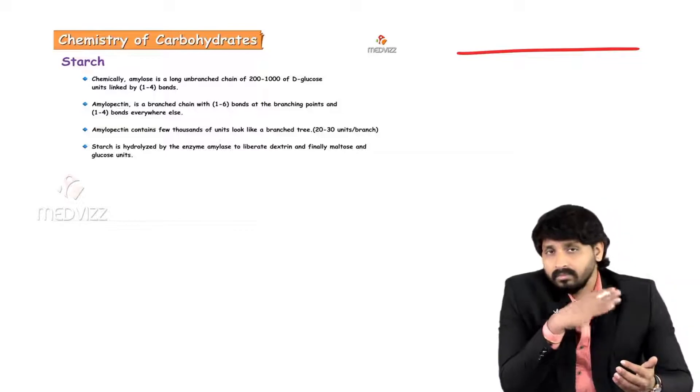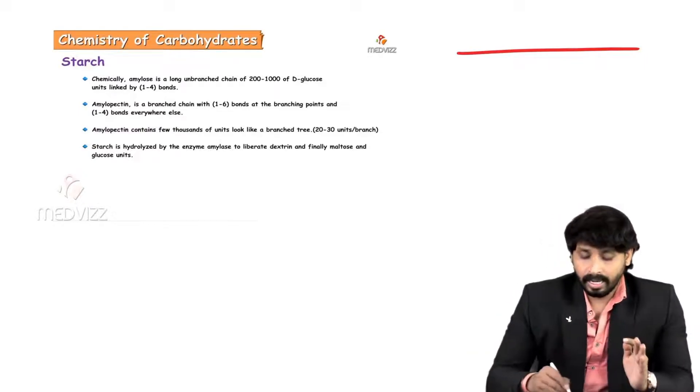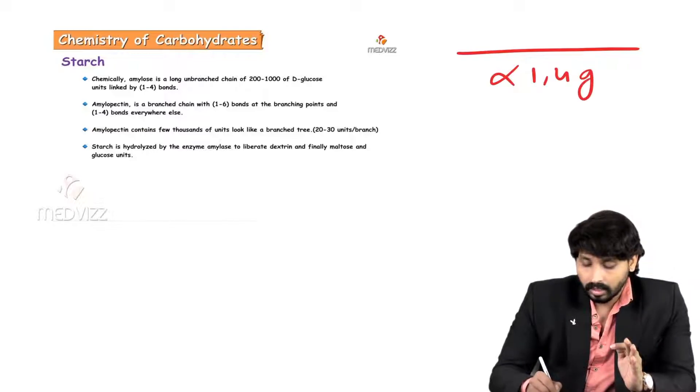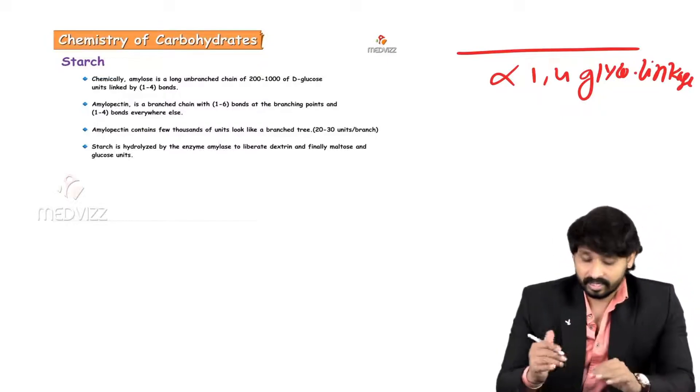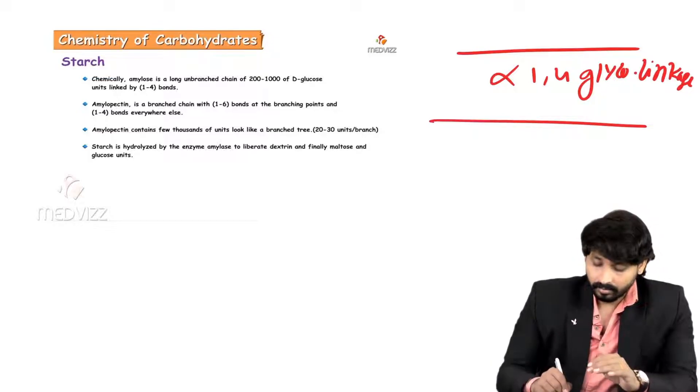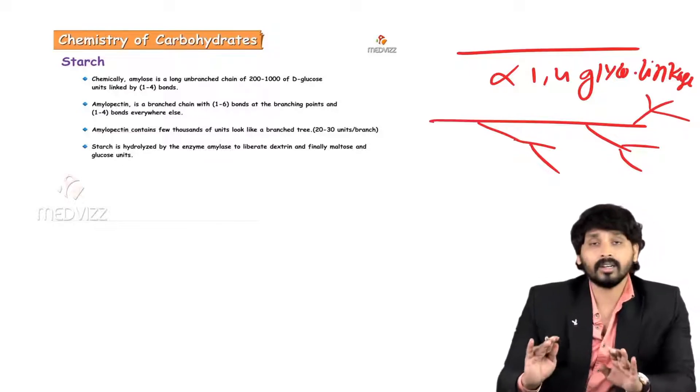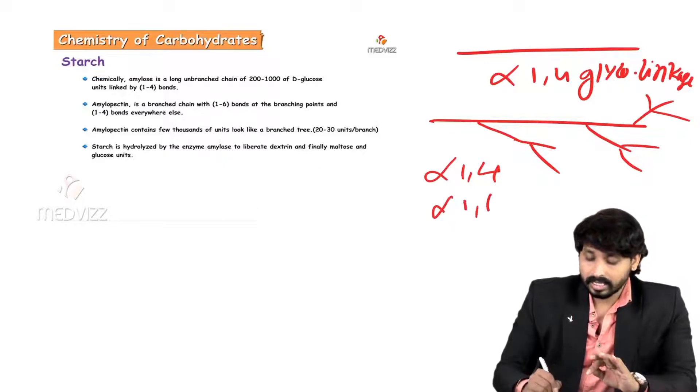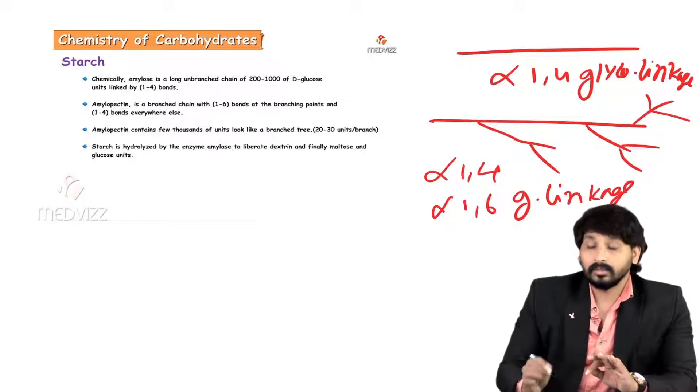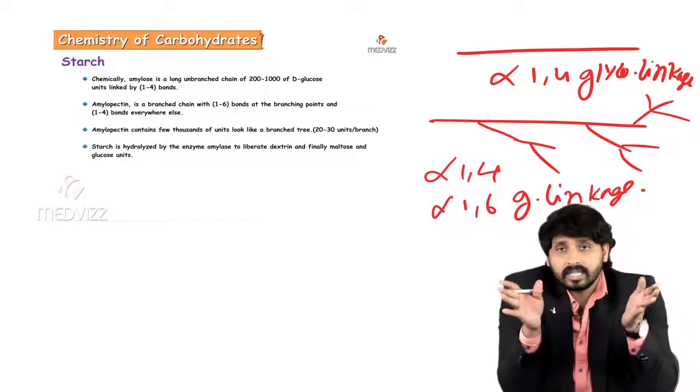Amylose is an unbranched one, which comprised of 200 to 1000 glucose units, which are all held together by alpha-1,4 glycosidic linkage. And amylopectin, which is branched, branches in the sense like tree. From the stem, branches will be coming out. Amylopectin along with alpha-1,4 glycosidic linkage, also has alpha-1,6 glycosidic linkage.